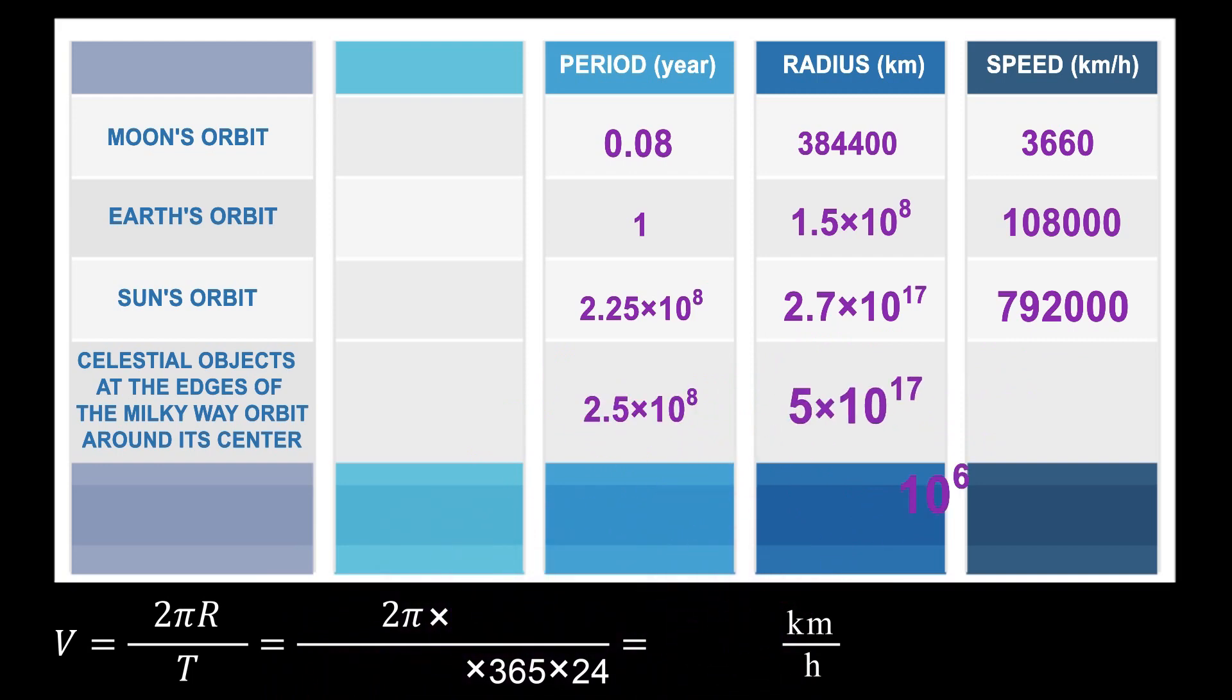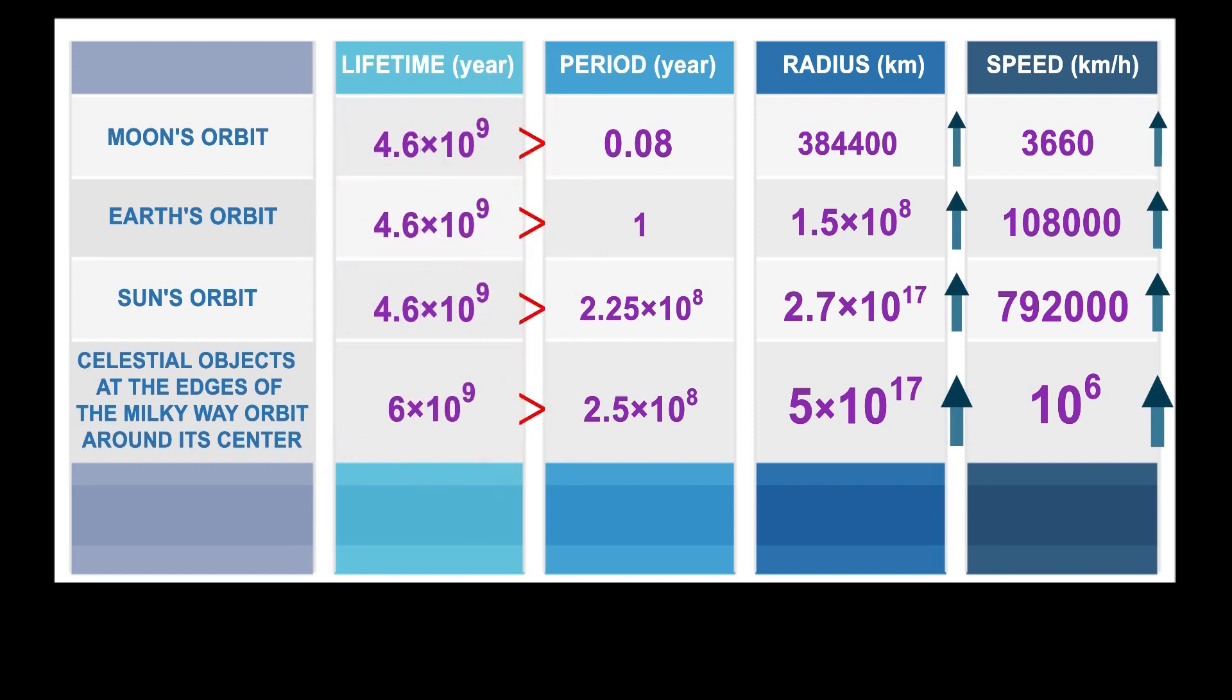Two important points can be noticed in this table. First, the further away an object is from the center of rotation, the higher the speed gets. Second, the rotation period of celestial objects is much shorter than their lifetime.